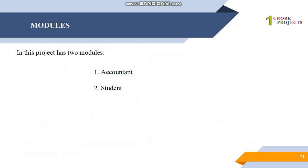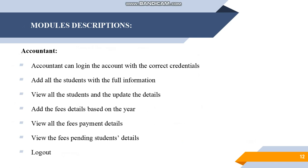In this project we have two modules: one is Accountant and another is Student. The accountant is basically the college management side. The accountant logs into the account with correct credentials, then adds all students with full information, views and updates student details, adds fees details based on year — for example, first year, second year, third year — updates the fee structure, views all fees payment details, views pending fees for each student, and finally logs out.